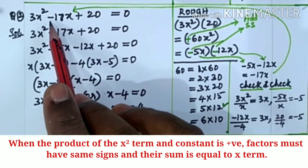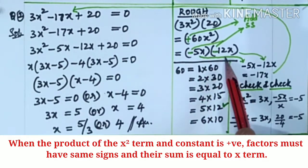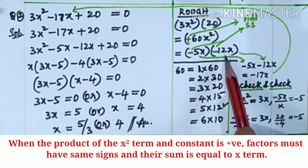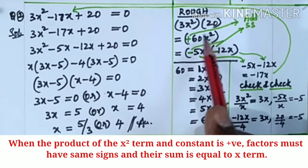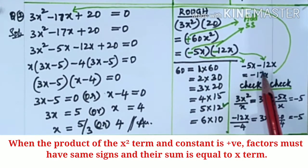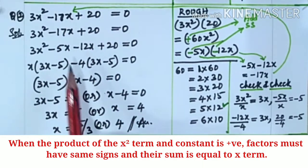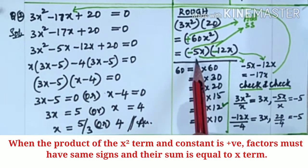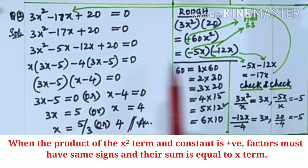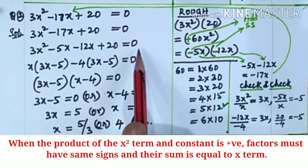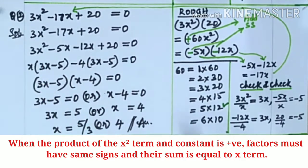But here we have minus. So these two should follow minus sign — same signs. Now we check: minus 5x into minus 12x is plus 60x². Minus 5x minus 12x is minus 17x. We should get this. Then instead of minus 17x, we write minus 5x and minus 12x. So 3x² - 5x - 12x + 20 = 0.